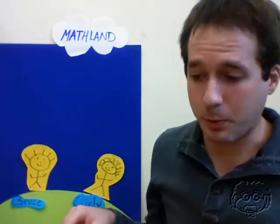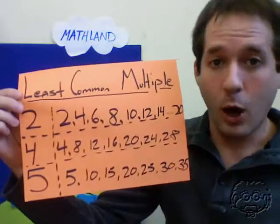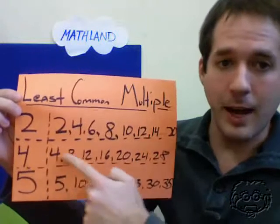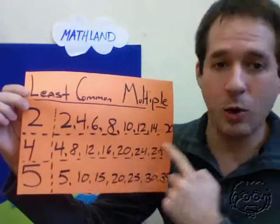Finding a lowest common denominator is a lot like finding a least common multiple. Remember, when we found a least common multiple for the numbers 2, 4, and 5, we wrote out all the numbers that each one divides into evenly. 2 divides into 2, 4, 6, 8, and 10, and so on.